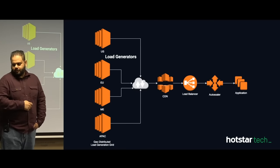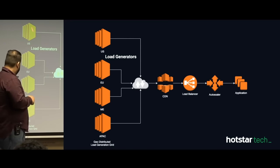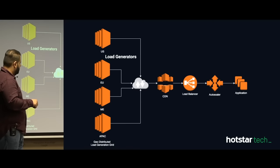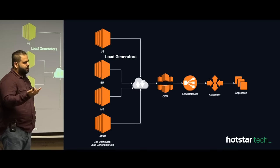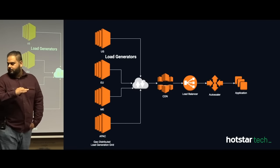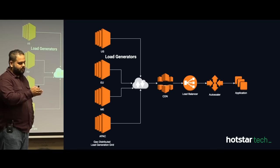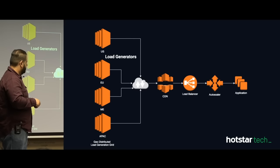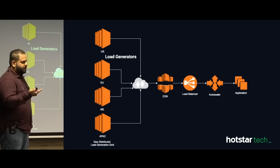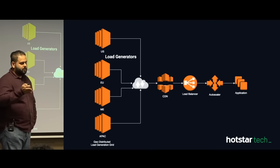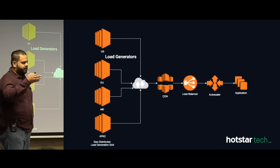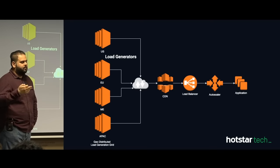The load generation infra is simple: C5 9XL machines distributed across eight regions, going through the internet to CDN, then load balancer — ALB or ELB. One important thing: Elastic Load Balancer is not really elastic in nature. Each load balancer has a limit to what it can handle. For a single application, we use four or five load balancers and control them using weighted routing so the load is distributed. Applications are hosted on EC2 or Kubernetes.